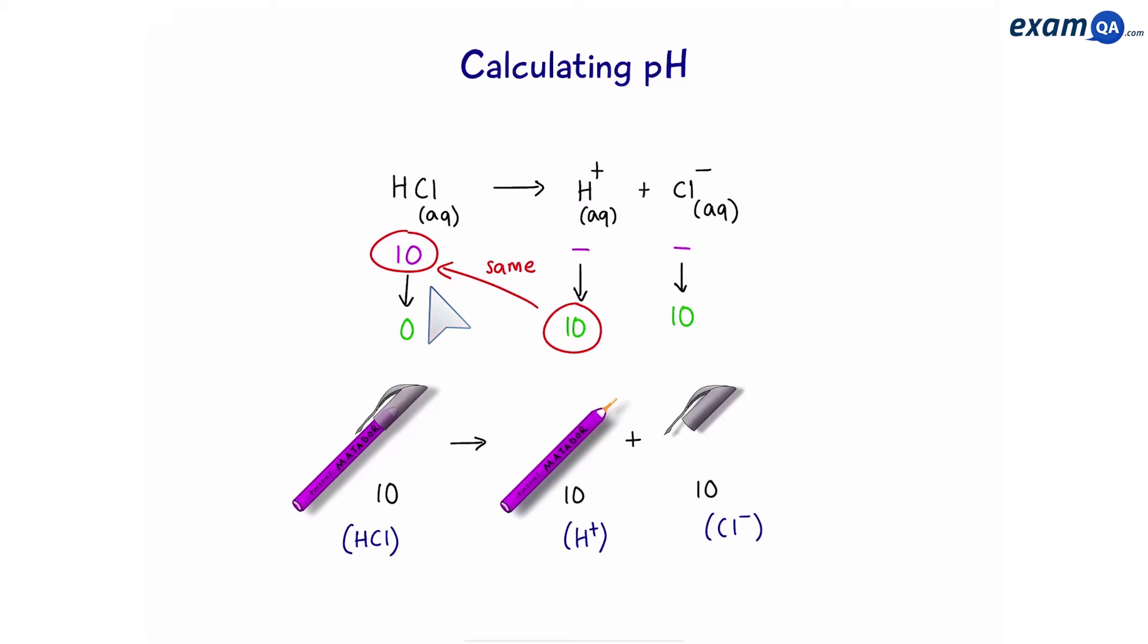So from here, we have our first important rule. The concentration of any strong acid, HA represents acid, is equal to the concentration of hydrogen ions.